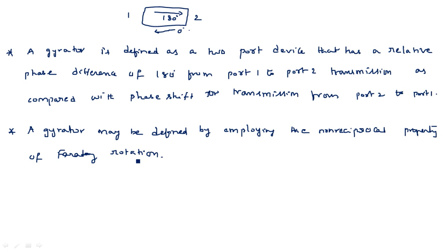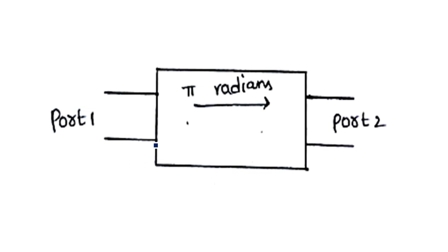A gyrator may also be defined by employing the non-reciprocal property of Faraday rotation. Non-reciprocal property means in one direction it gives a phase shift, and in another direction there is no phase shift. I will explain with respect to the diagram how the phase shift occurs. We can represent the gyrator waveguide simply like this — port 1 and port 2 — it is simply a two-port device.